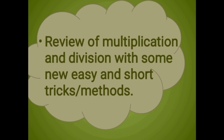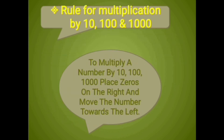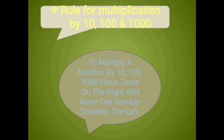Today we will have some review of multiplication and division, with some new easy and short tricks or methods. If we remember these rules for multiplication and division, then I am sure you will be able to solve some of the multiplication questions easily and even verbally. The rule is for multiplication by 10, 100, and 1000: when we multiply a number by 10, 100, or 1000, we place zeros on the right and move the number towards the left.